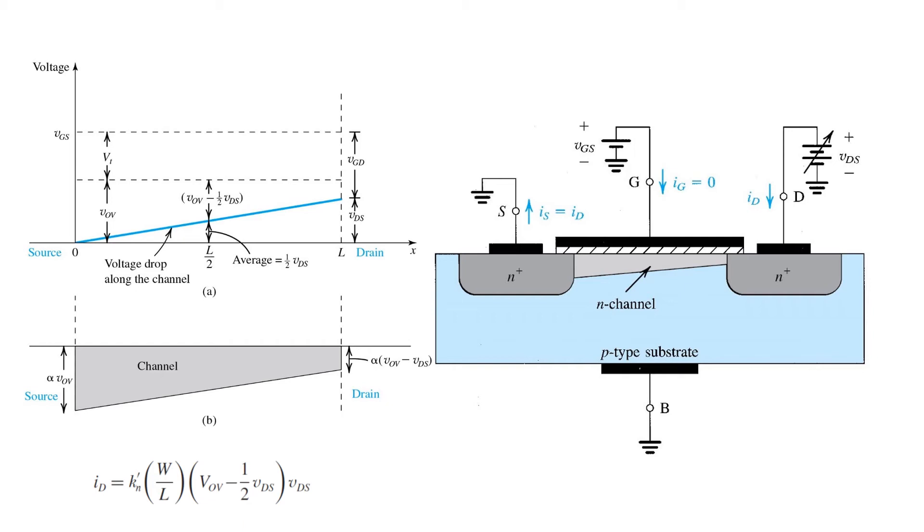Notice that as long as VDS is much smaller than the overdrive voltage, this expression is well approximated by the expression we had on the last slide, simply neglecting the term one half VDS.